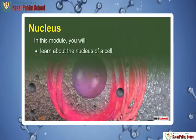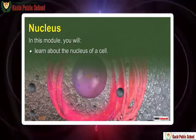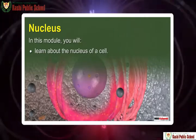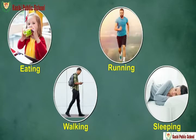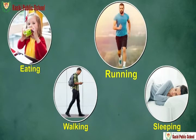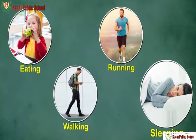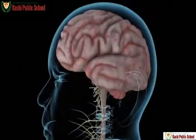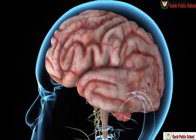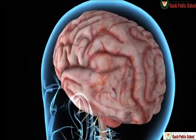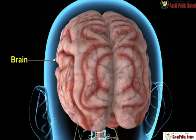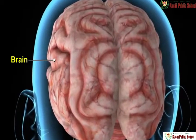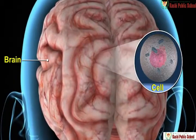Nucleus. In this module, you will learn about the nucleus of a cell. We perform different activities such as eating, running, walking and sleeping daily. One organ inside the body instructs the body to perform all these activities. This organ is the brain. Such a control system is present even at the minutest level of the body, that is the cell.